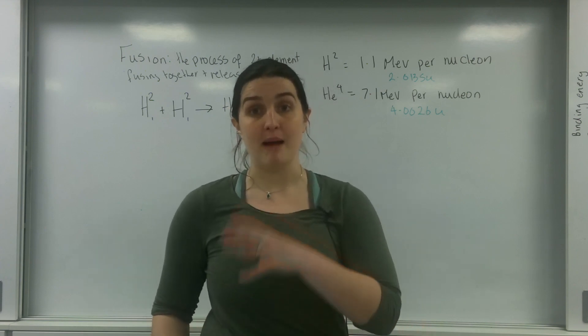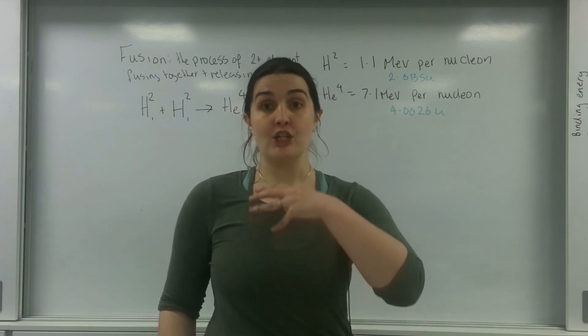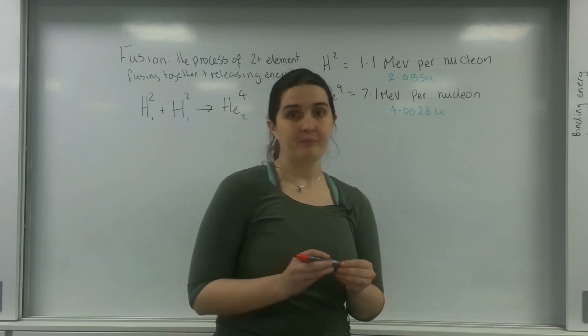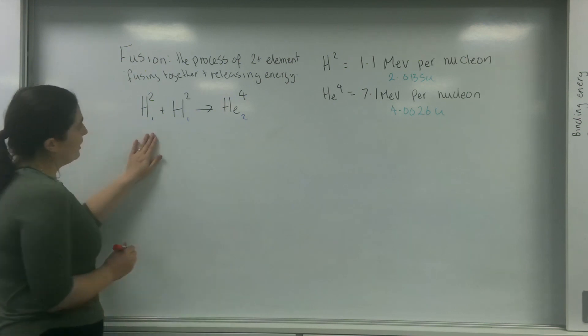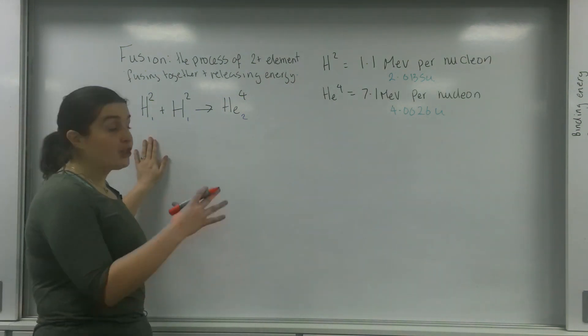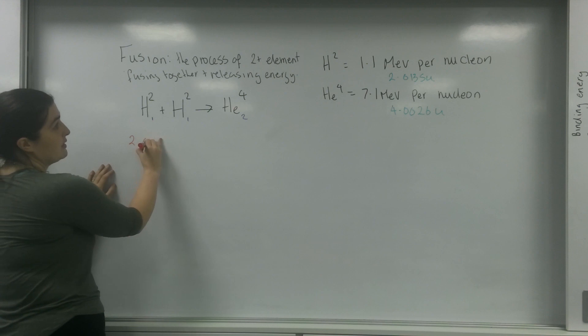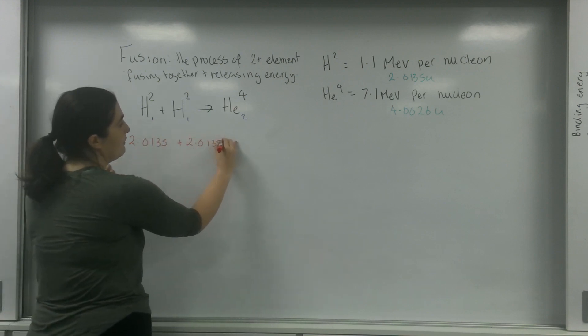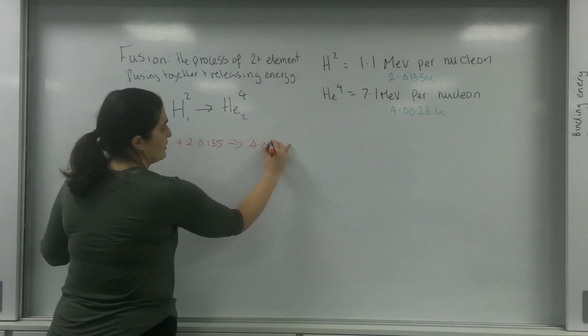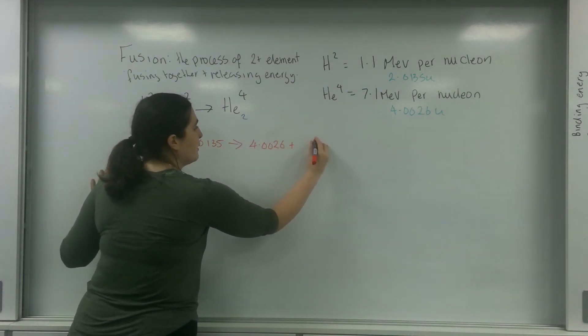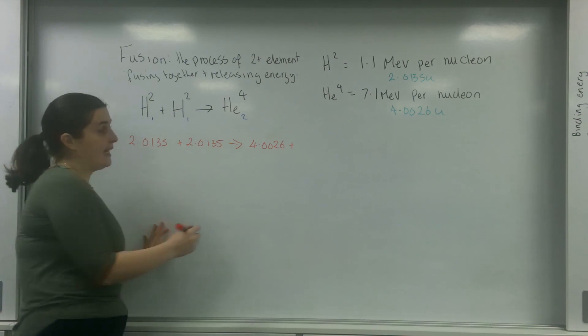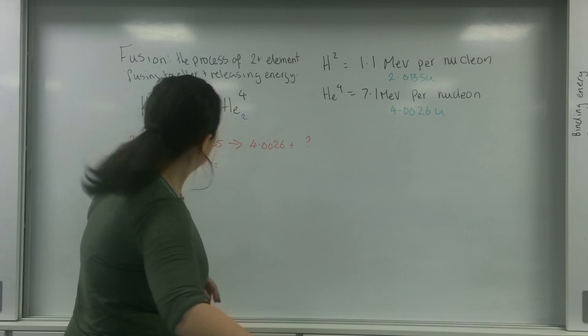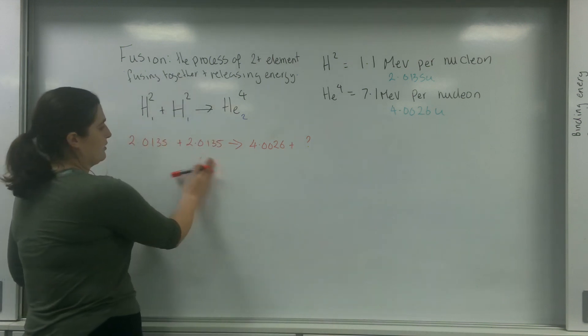So the first thing I'm going to do is look at the mass deficit. I'm going to actually look at the mass before and the mass after and I'm going to calculate energy with that. So I'm going to write this out just like I would write the formula. So I've got 2.0135 plus 2.0135 goes to 4.0026 plus my mass deficit here. So if I just simplify the insides first, 2.0135 times by 2 is 4.027.